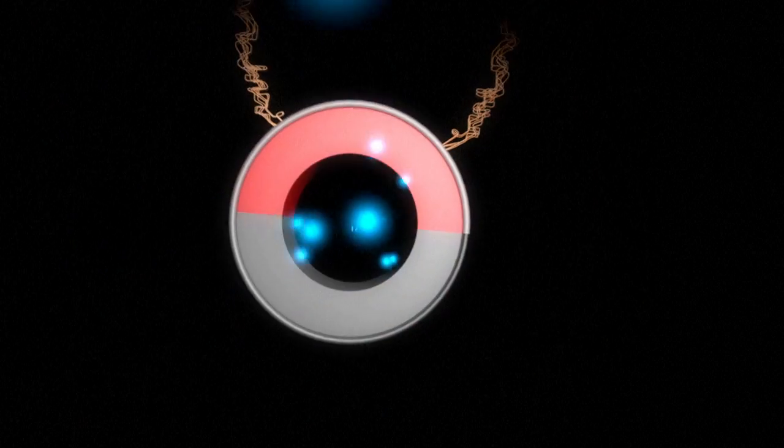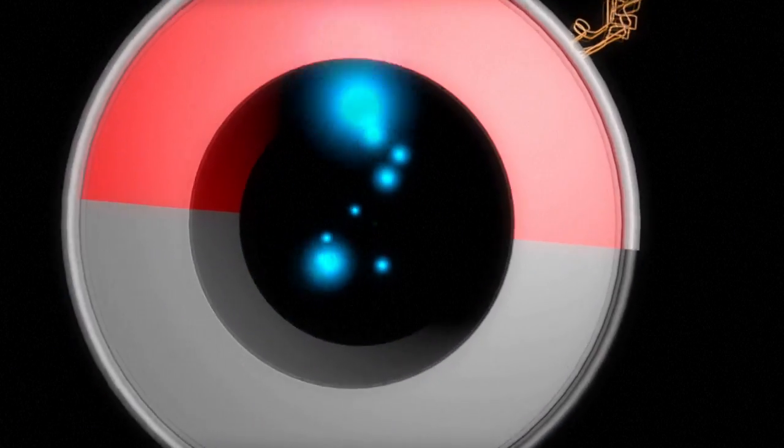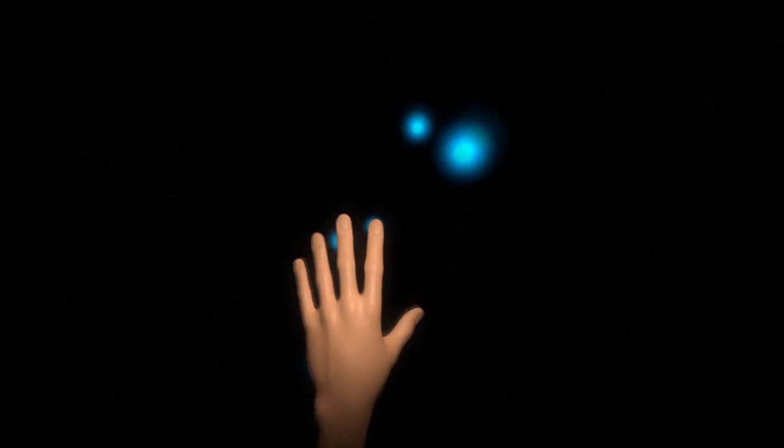Every second, some 66 billion of these ghostly solar particles move through an area the size of a human fingernail. And yet, only one in 100 million will actually arrive on Earth.